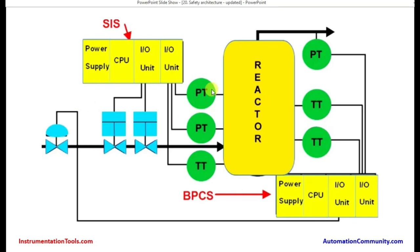Similarly, another set of pressure transmitter and temperature transmitter is going to the input-output module of the safety instrumented system. This is a different system — an altogether different processor — because the safety instrumented system requires a very high level of testing and proofing. The processor itself may be different — it should be different, having high capacity and high processing speed — and it could be a redundant processor.